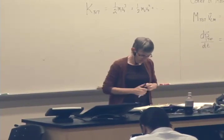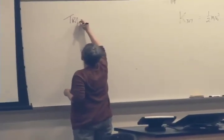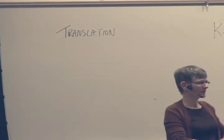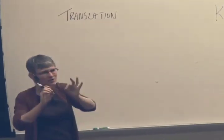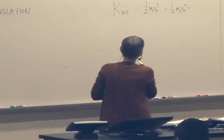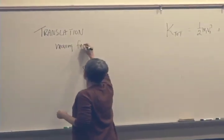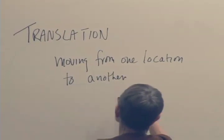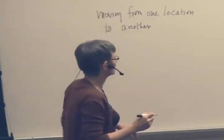So we have another vocabulary word: translation. In the physics and mathematics sense, it doesn't mean going from Spanish to Mongolian. It means an object moving its center from one location to another — just moving from one place to another. So we say that the translational motion of these things is the motion of the center of mass, basically. We're talking about the center of mass moving from one place to another.